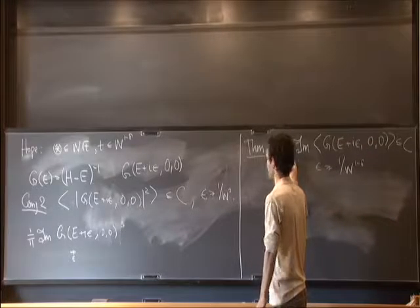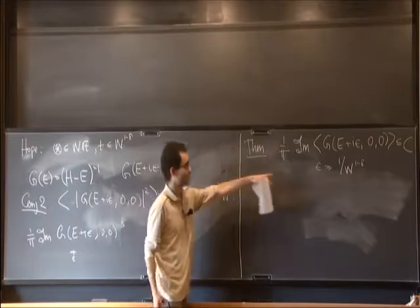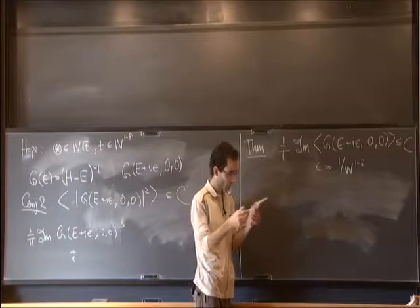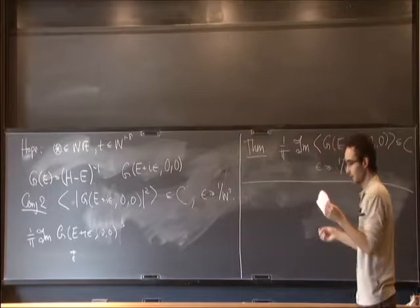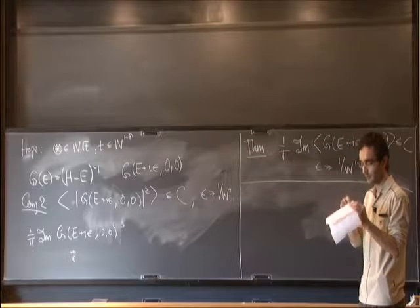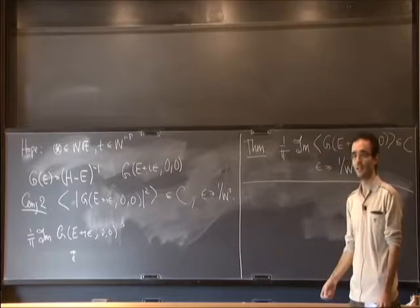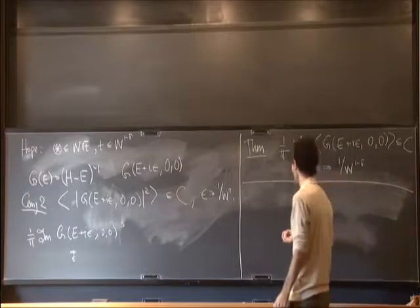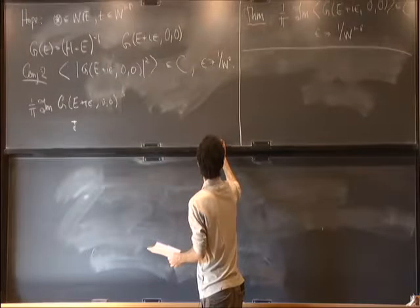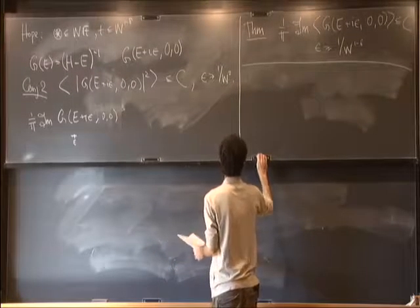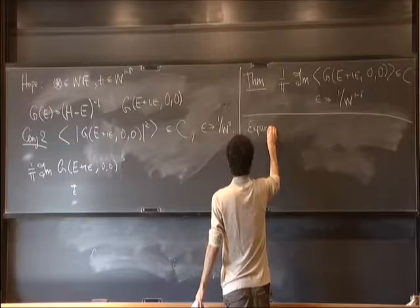I think that once we have this result, we'll also have the conjecture for the same epsilon. Now I will start explaining the perturbative expansion, beginning with very naive and simple things, then explaining what the issues are.